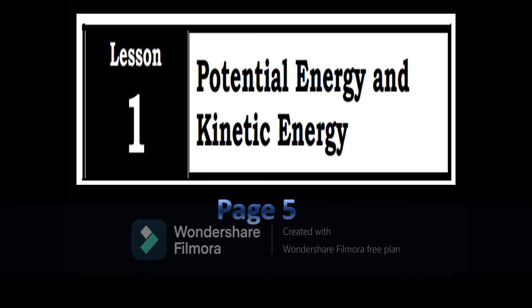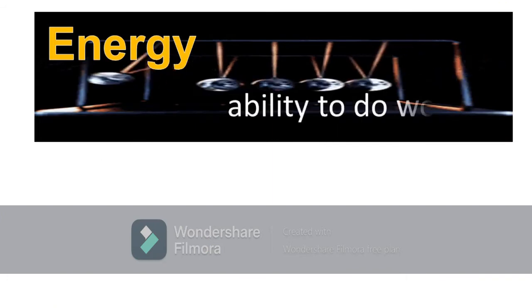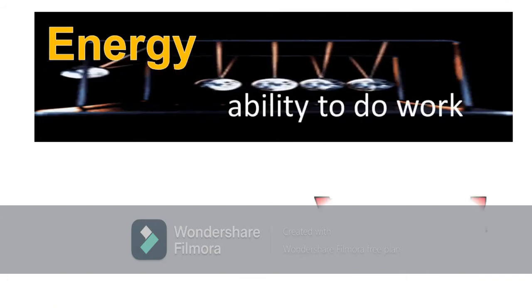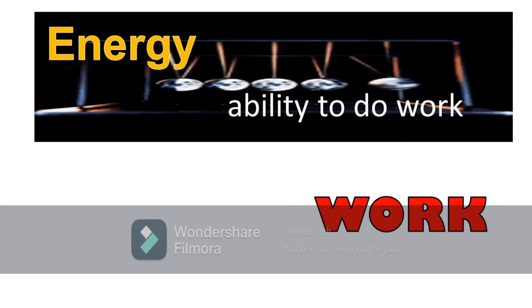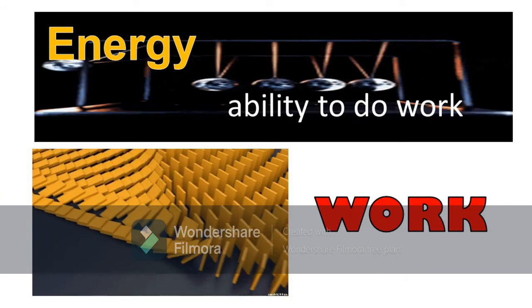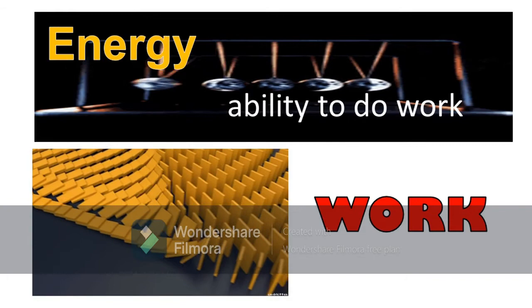Let's proceed to the next part of the Module, What's In, Page 5, Lesson 1: Potential Energy and Kinetic Energy. But before we discuss that lesson, let's first define what is Energy. Energy is defined as the ability to do work. When work is done, it is accompanied by a change in energy. When work is done by an object, it loses energy. On the other hand, when work is done on an object, the object gains energy.